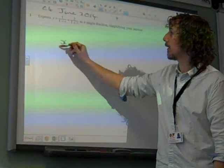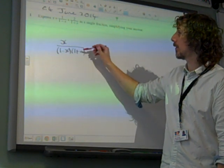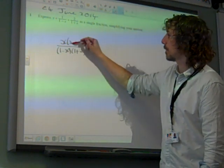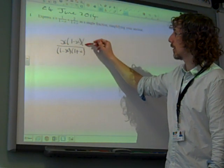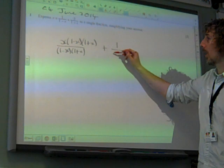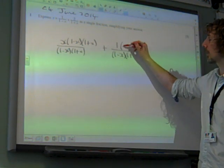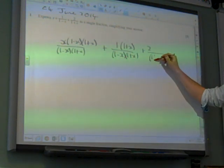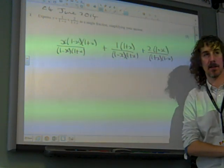So we're going to have x over (1-x)(1+x), so we need to times top and bottom by (1-x)(1+x). We're going to have 1 over (1-x), but we're going to times the top and bottom by (1+x). And this one is currently over (1+x), so we're going to times it by (1-x) on the bottom and times the top by (1-x).